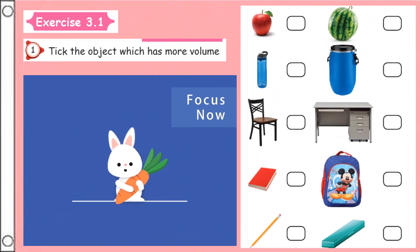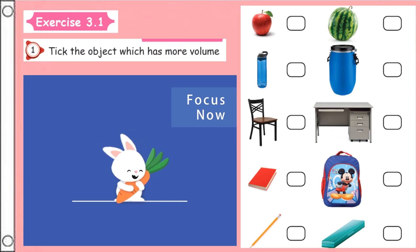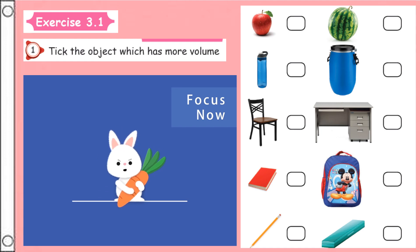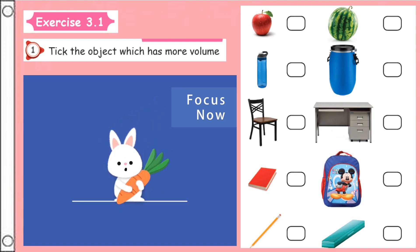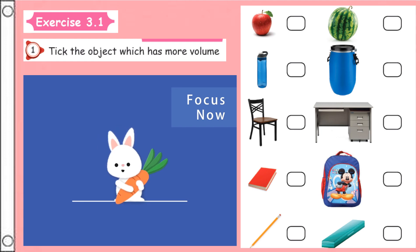Exercise 3.1, first one: tick the object which has more volume. So it is very easy for you. Among these objects, we are going to put a tick on which has more volume. First one — apple or watermelon. With that size itself, we can put a tick. So, watermelon!